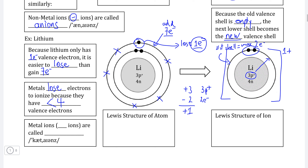If we want to calculate the charge by looking at the change in the number of electrons instead, we can do that as well. Lithium has lost one electron, meaning it is less negative than before — because we're taking negative charge away. When we become less negative, we become more positive. Lithium now has more protons than electrons. Subtracting a charge of negative one — which is the charge of one electron — is the equivalent of adding positive one, confirming that lithium ends up with a charge of positive one.